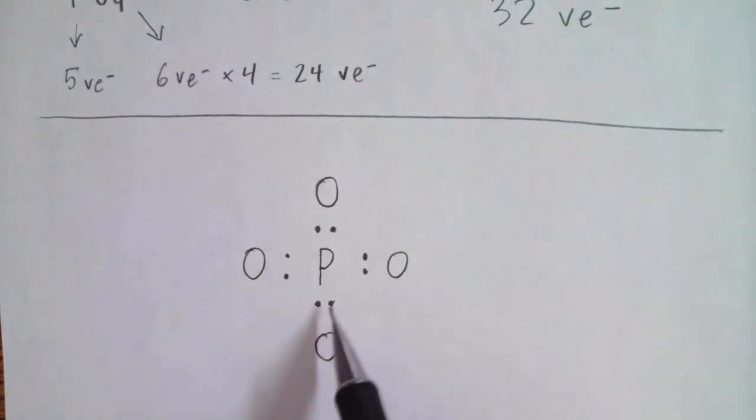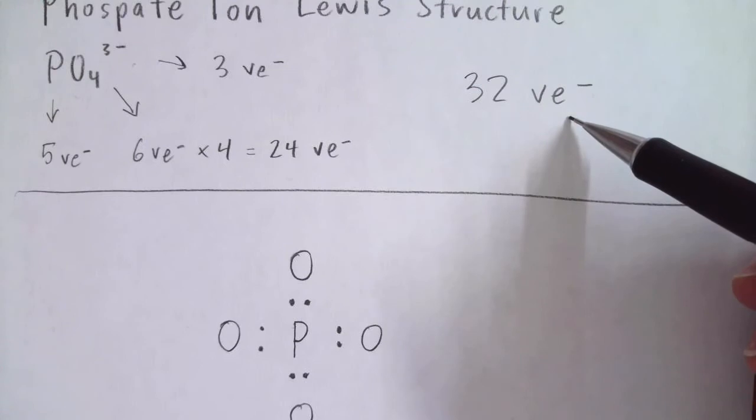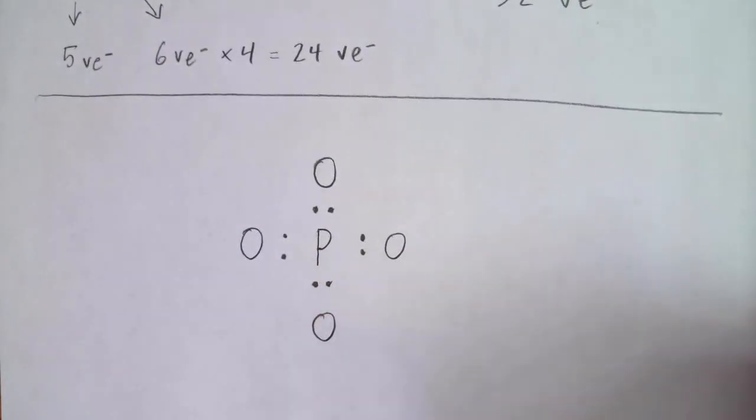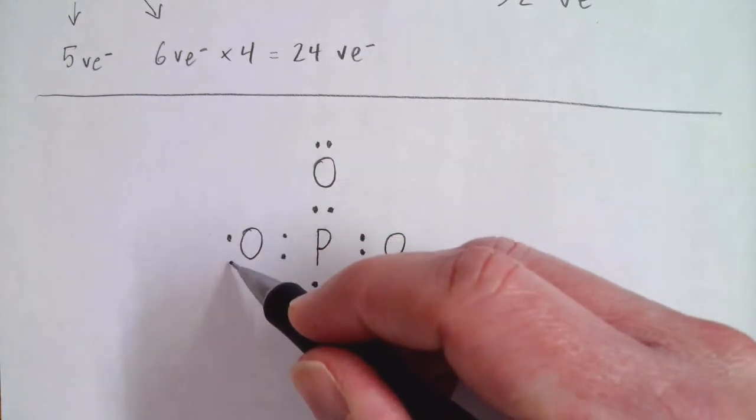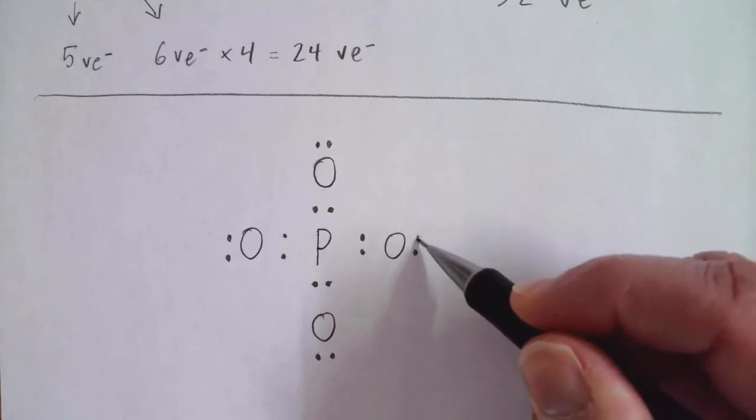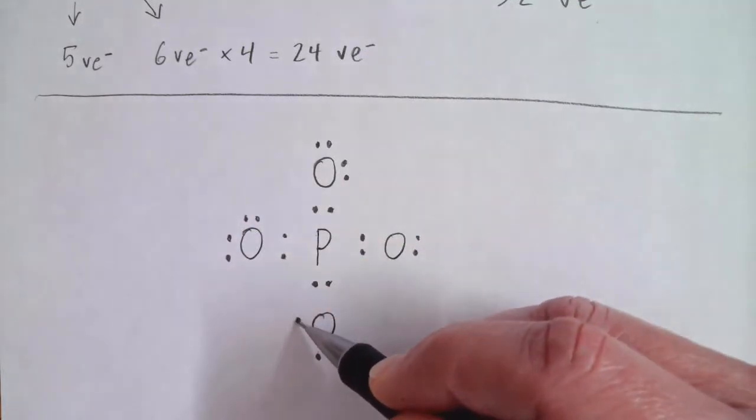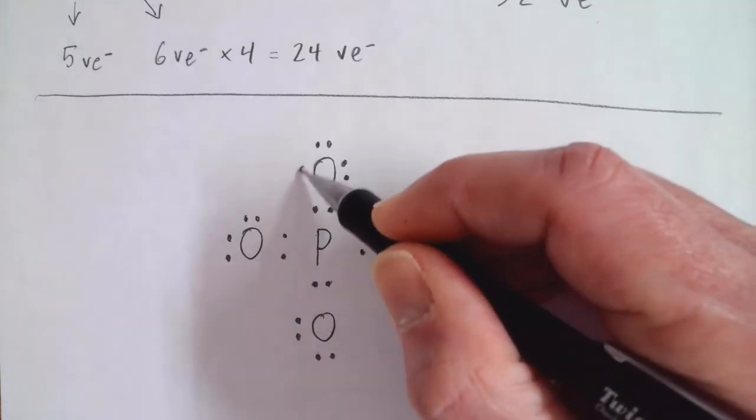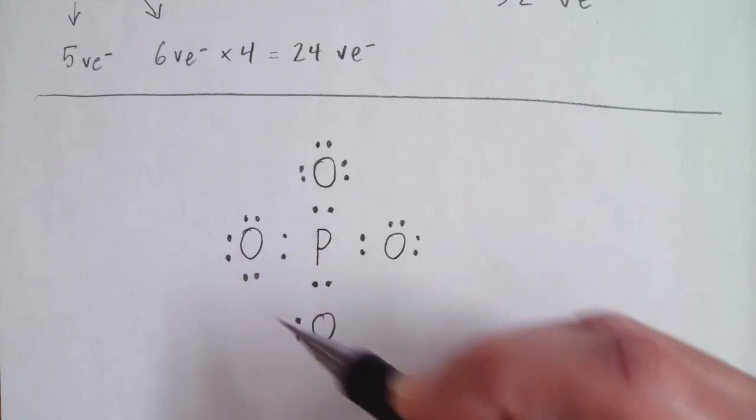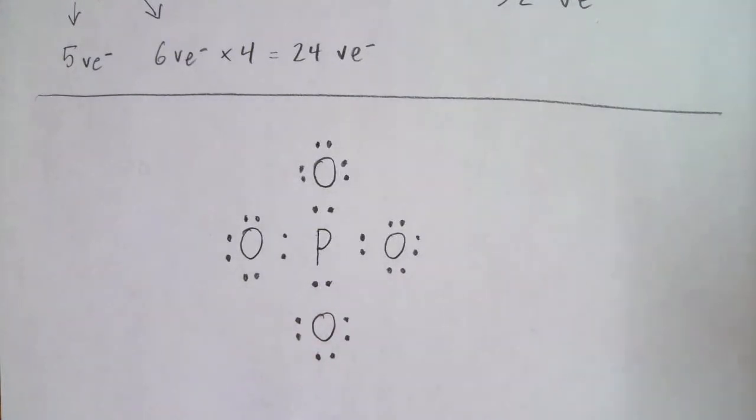So that will use up 2, 4, 6, 8 valence electrons. I need to use 32 total. So as I count them out and arrange them symmetrically, I've used up 8. I'm going to go 9, 10, 11, 12, continuing through to 32. And that's all of my electrons.